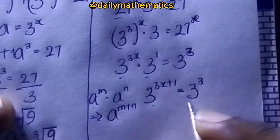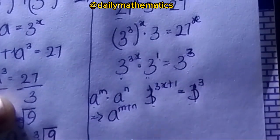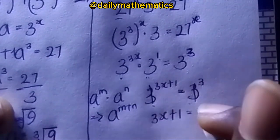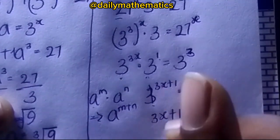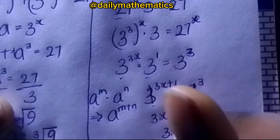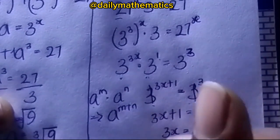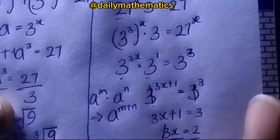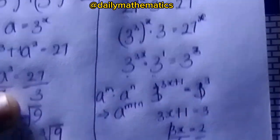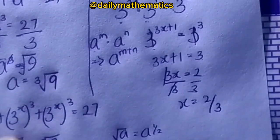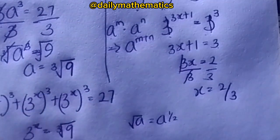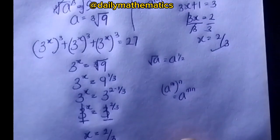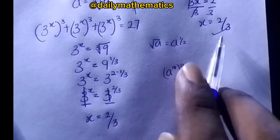With the same base on both sides, we equate exponents: 3x + 1 equals 3. So 3x equals 3 minus 1, which is 2, giving x equals 2/3. The answer matches exactly what we got in Method 1.